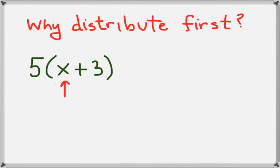In this case, we have x, which is a variable. We don't know what x is, we don't know what its value is, so we can't add x plus 3 together.